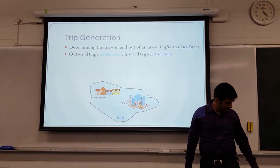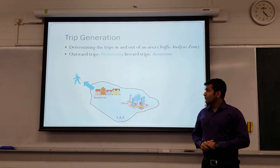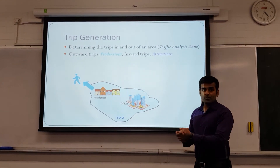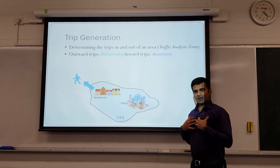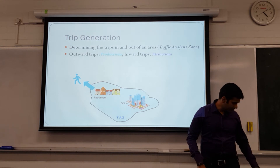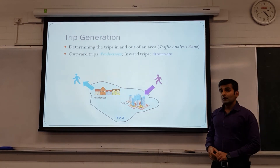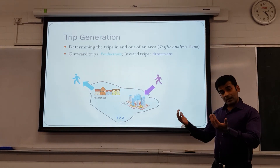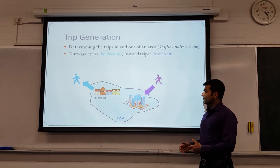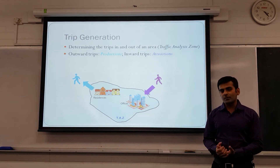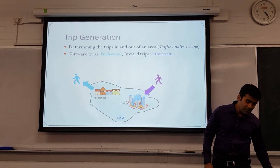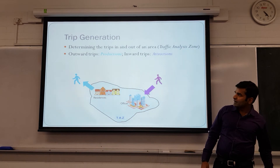What trip generation does is find out the productions and attractions from that particular zone. Consider a suburb with some residences and offices. We figure out how many people are moving out from this zone, which is determined as a function of the number of houses. On the other hand, we determine how many people are coming into the zone — attractions — which is a function of how many offices or shopping complexes are in that TAZ.